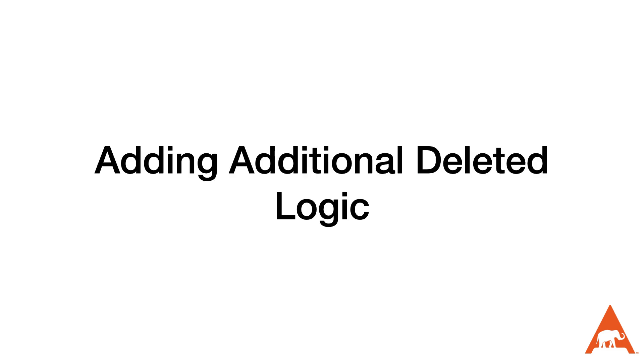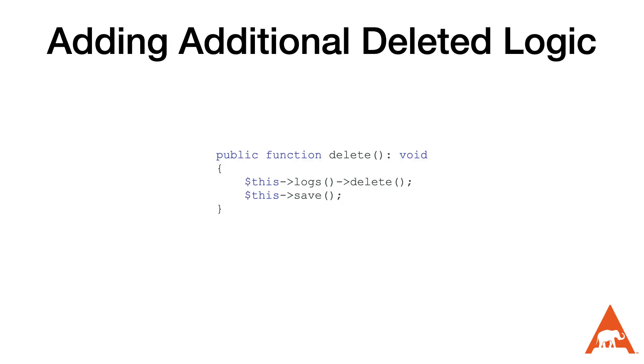Because we're interacting with the delete logic through the delete function, we can add additional logic to what happens when we delete the model inside of that function. With soft deleting, we're losing functionality like cascading deletes that exist within databases, so we have to roll our own inside the delete function. One of the things I personally like to do is track who deleted the model — this is helpful because if somebody comes to us and asks what happened to this thing, we can not only tell them when it was deleted, but also who did it.